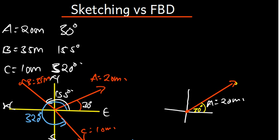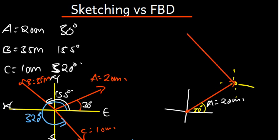From the destination of vector A, I'm going to put a dotted line — a dotted XY prime — to help me know where to go next. Then I go to vector B. Vector B is 155 degrees, which is in the second quadrant. Vector B is 35 meters, so it's supposed to be a bit longer than vector A. I draw it in the second quadrant and label it vector B, which is 35 meters.